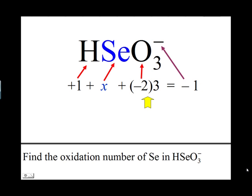Since negative 2 times 3 is negative 6, the equation can be rewritten as 1 plus x minus 6 equals negative 1. Negative 6 plus 1 is negative 5, so x minus 5 equals negative 1.